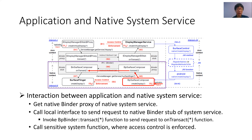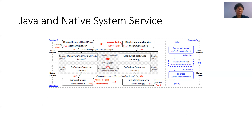Third, the remote interface of the native system service is invoked, where the access control is enforced. In this example, the interface createDisplay of SurfaceFlinger service is invoked. Since the execution of createDisplay results in the sensitive operation of creating a secure virtual display, SurfaceFlinger enforces access control on the caller of createDisplay.